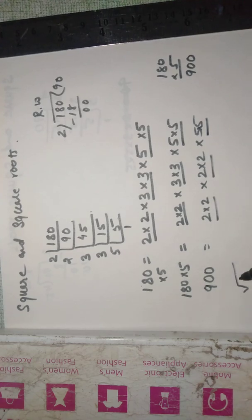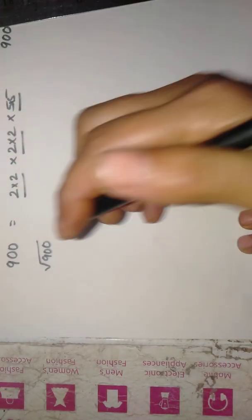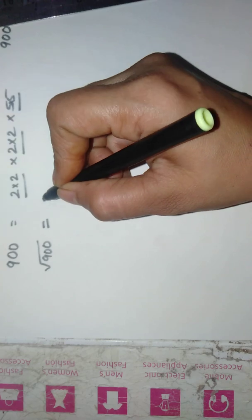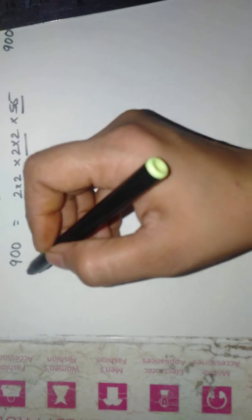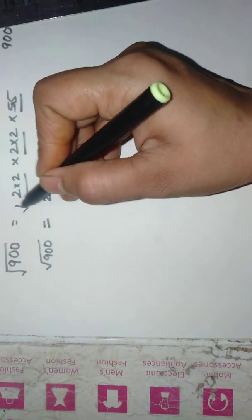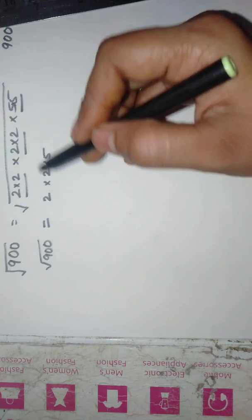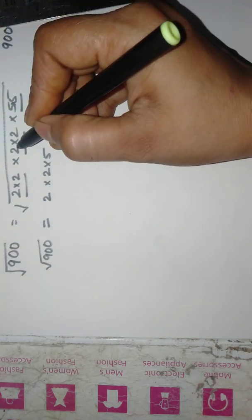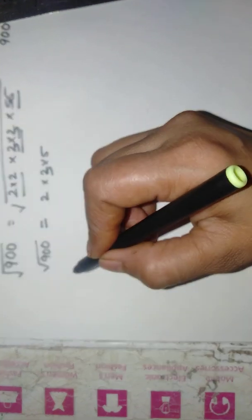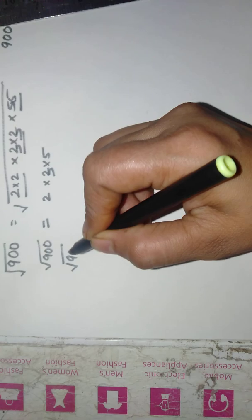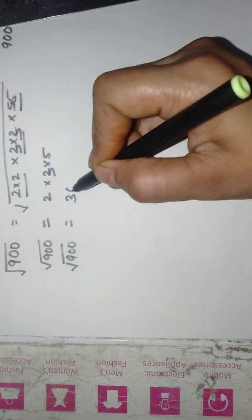Square root of 900 will be 2 into 3 into 5, taking out the common from each factor like this. 2 is taken common here. Sorry, here is 3. So 3 is taken common and 5 from here. So square root of 900 is 30.